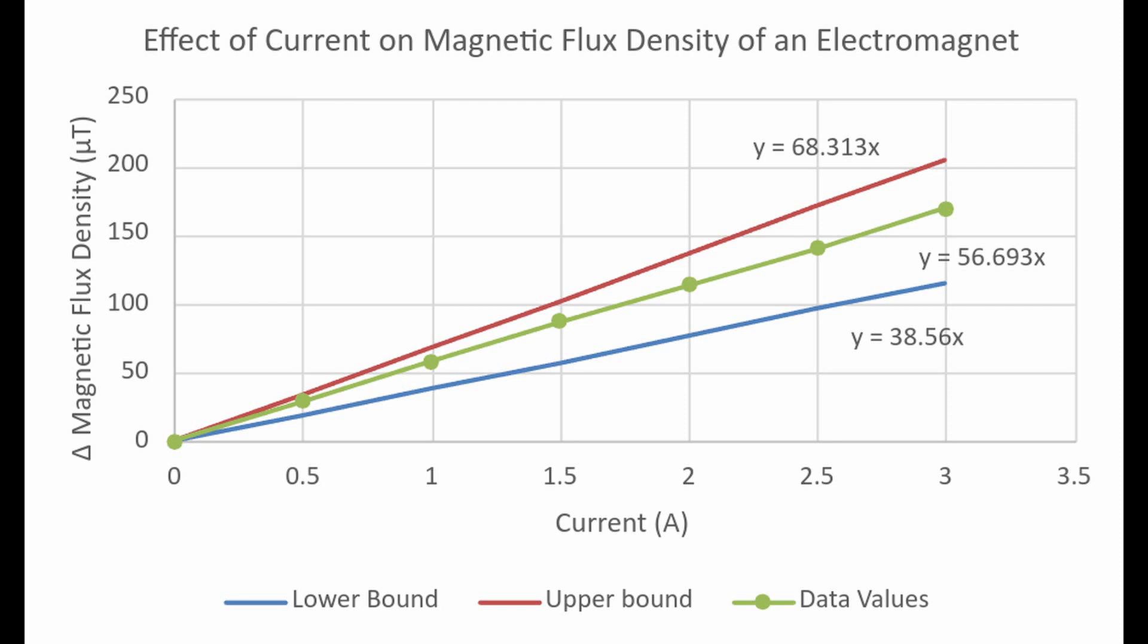Data can be collected by conducting repeated trials with varying currents. For each trial, take the difference between the magnetic flux density when the electromagnet is on and when it is off. Then, compare this to the current in the trial. We hope you enjoyed this experiment and have learned something about electromagnetism.